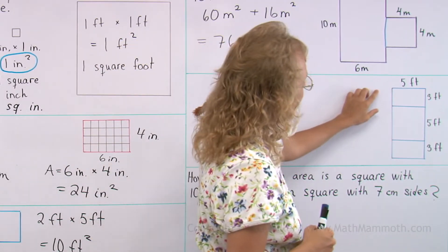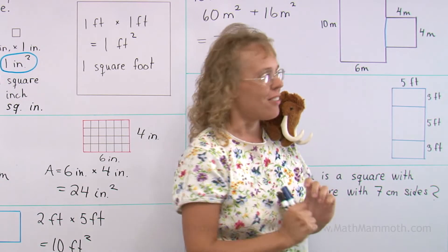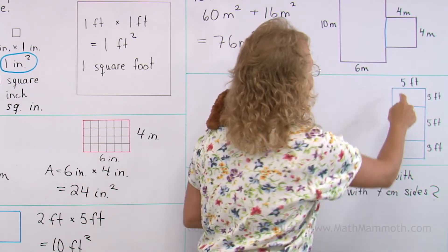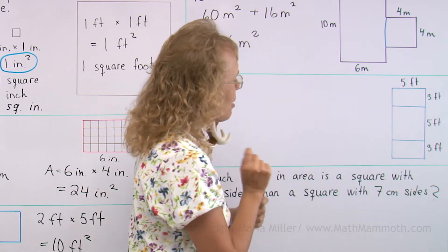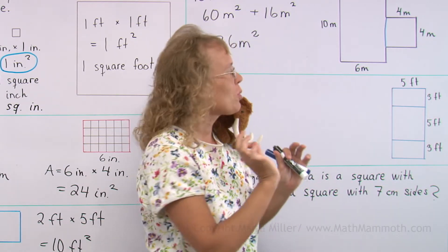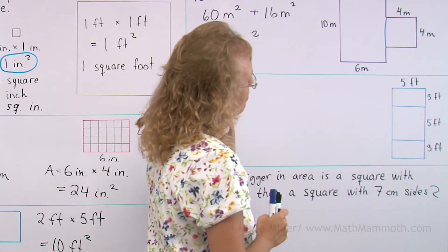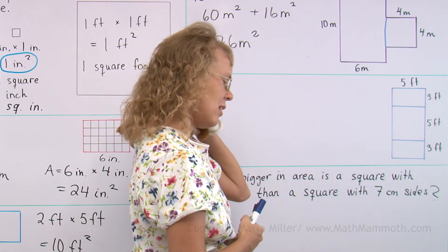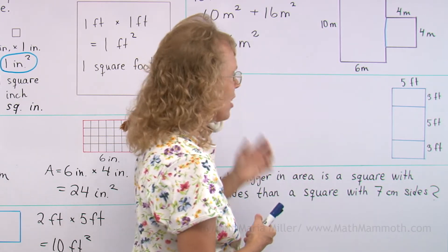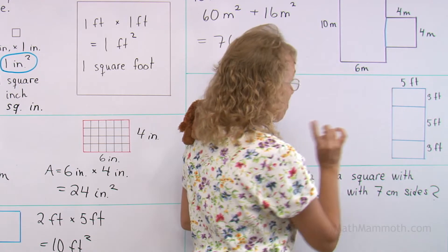What about the area of this shape, the total area? We could ask for the area of these parts too. But this time I just wanted to find the area of the total rectangle. Matthew is saying, okay, find the area of each part and add. That works.